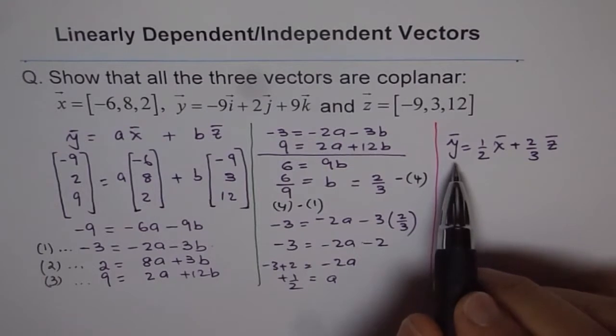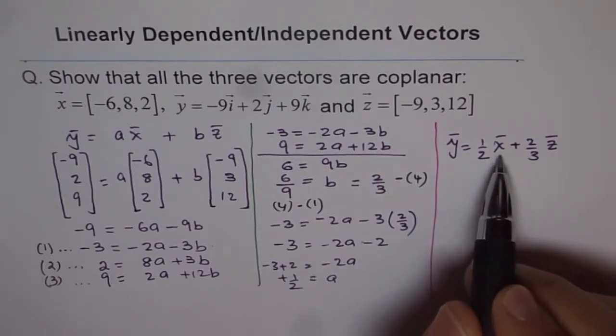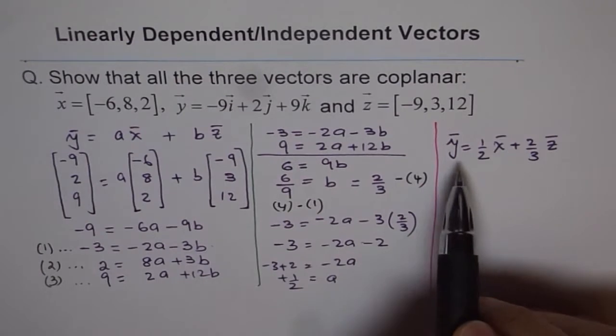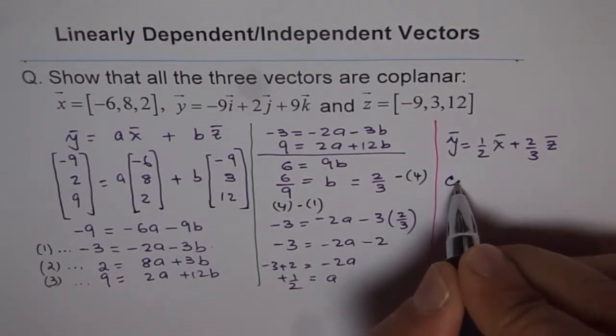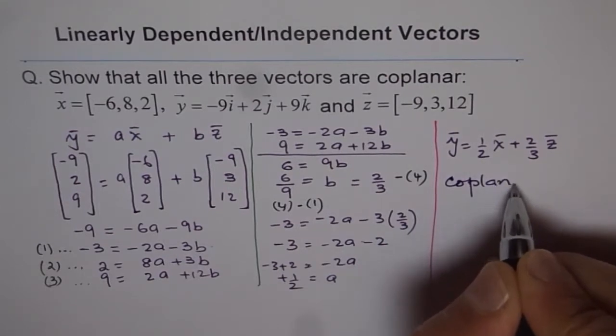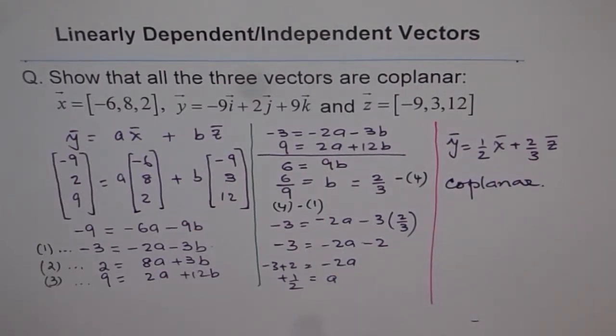So that is the combination which you get for y. So y can be written as a linear combination of other two vectors, x and z. Since it can be written, we say it's coplanar. So all the three are coplanar. So that is how you prove they are coplanar.